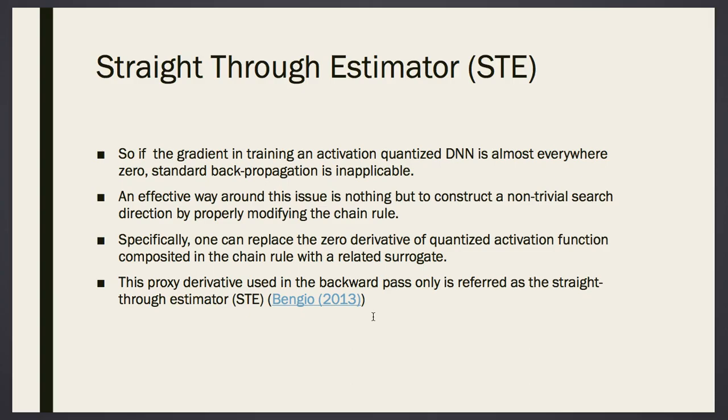If you don't do, if you can't get any gradient value because of the signum function, because the gradient is zero, you choose a non-trivial search direction, where you can continue the search in the weight space. Well, instead of the zero derivative, we use a substitute, a surrogate, which is called the straight-through estimator. They call this proxy derivative because it is not actual derivative, but it's proxy derivative.